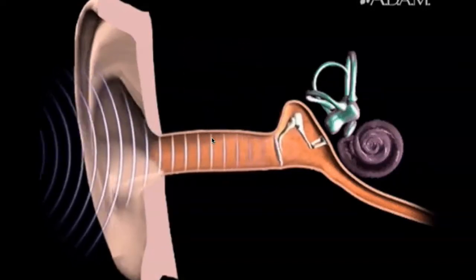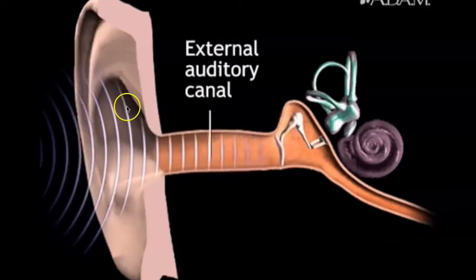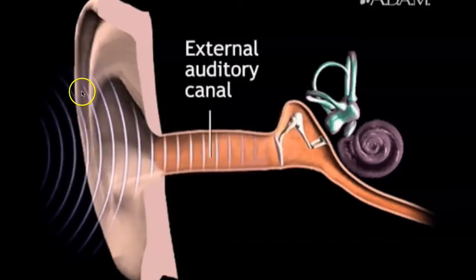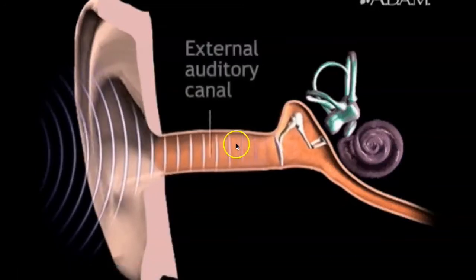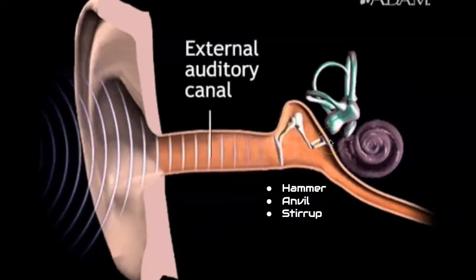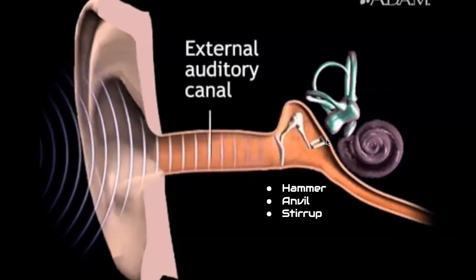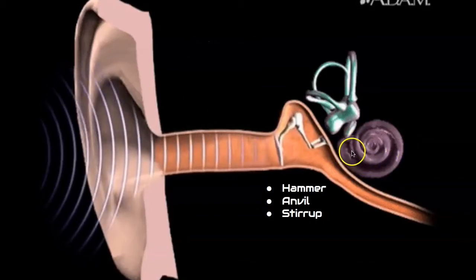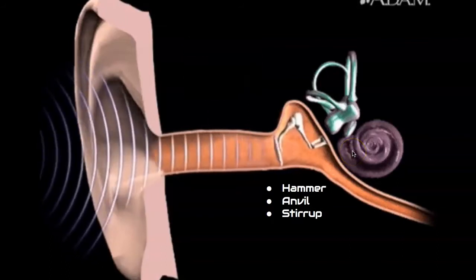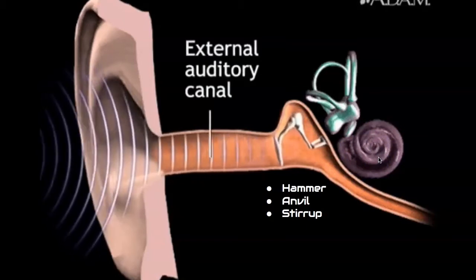For example, tapping on the laptop causes vibrations that travel through the air. Your pinna picks them up, they travel through the auditory canal, through the three bones of the middle ear — hammer, anvil, and stirrup (stapes) — and then those vibrations hit the tectorial membrane inside the cochlea. As the tectorial membrane is hit, it amplifies the sound waves so your brain can process them as sound.